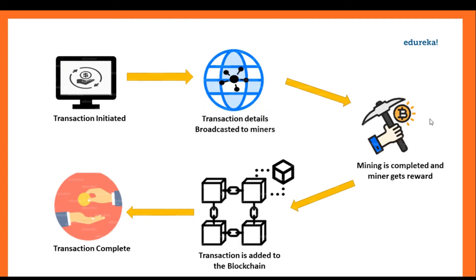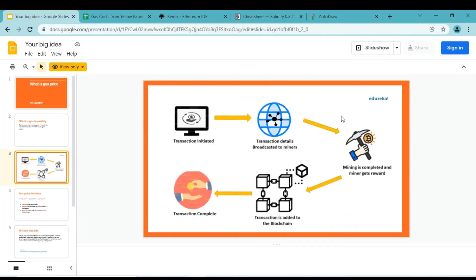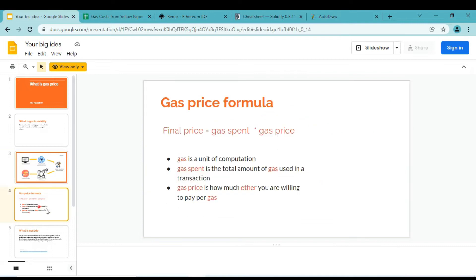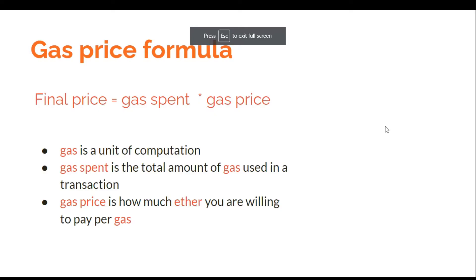Each transaction we make will require some addition operations, multiplication operations, or whatever operations that transaction needs — and based on that, the gas price gets decided. The formula is: the final price of gas deducted from your account equals gas spent multiplied by the price of gas. Gas is needed for computation — your transaction requires some operations to perform, which may be complex or simple, and each operation needs some CPU power.